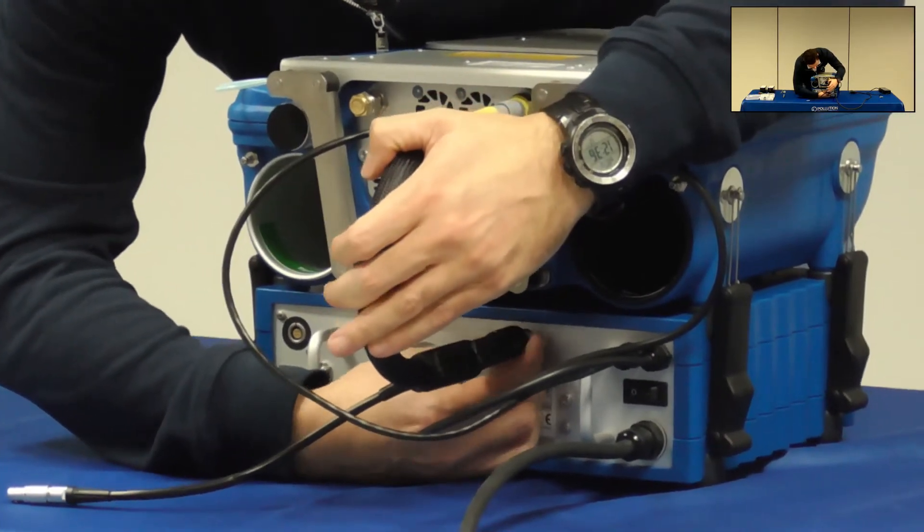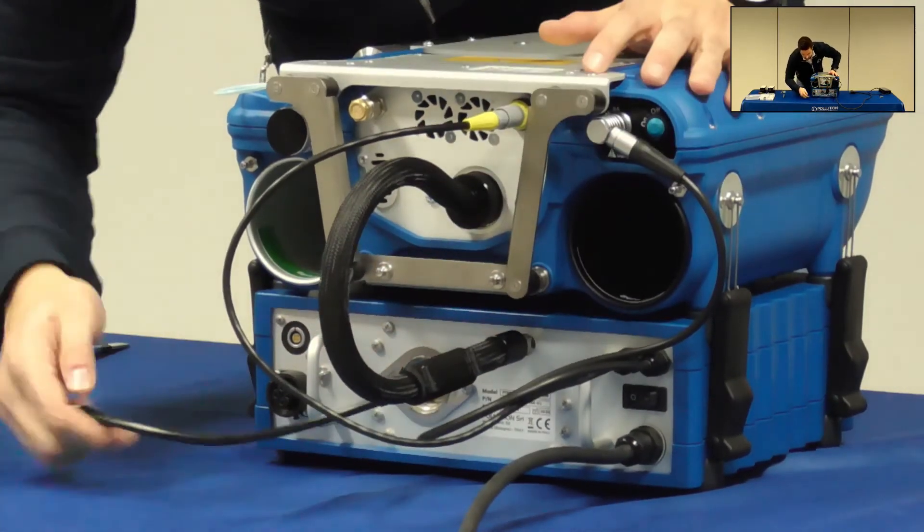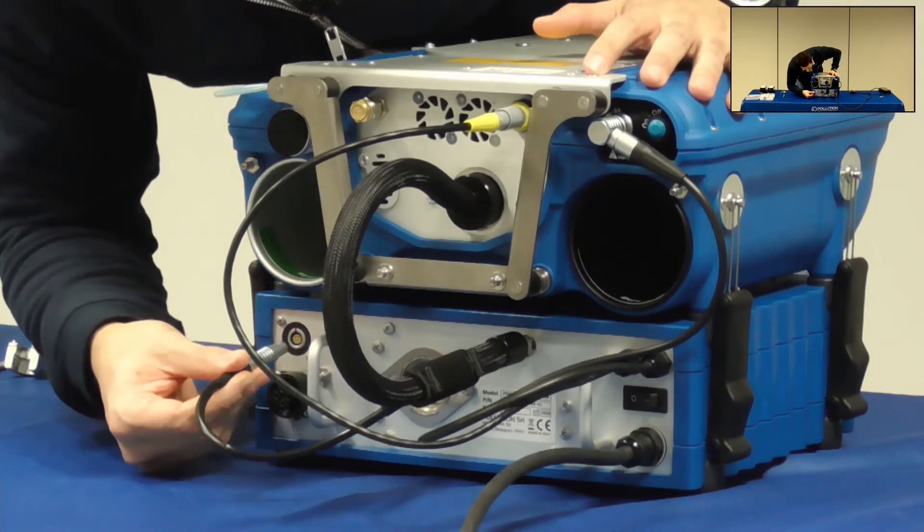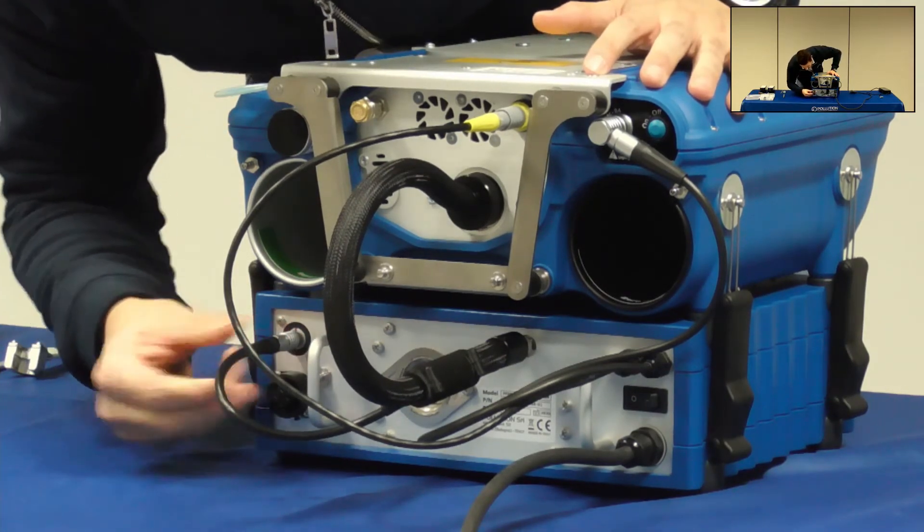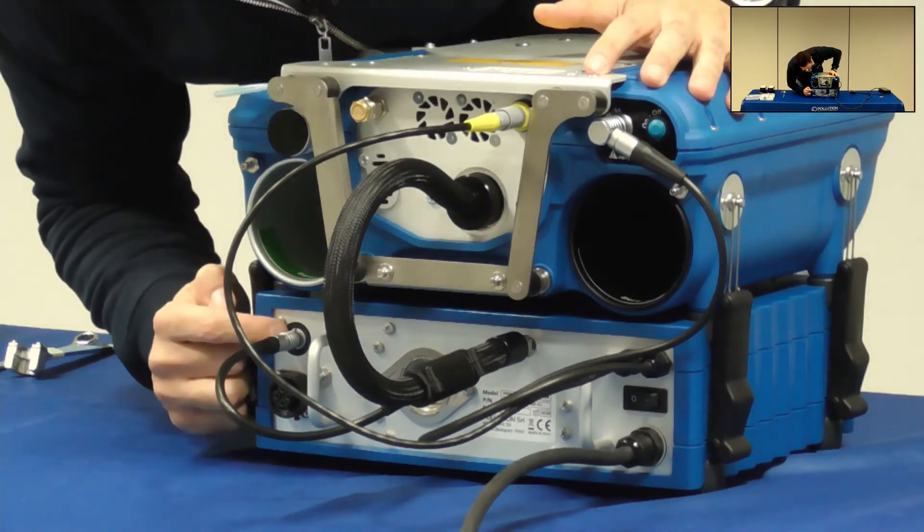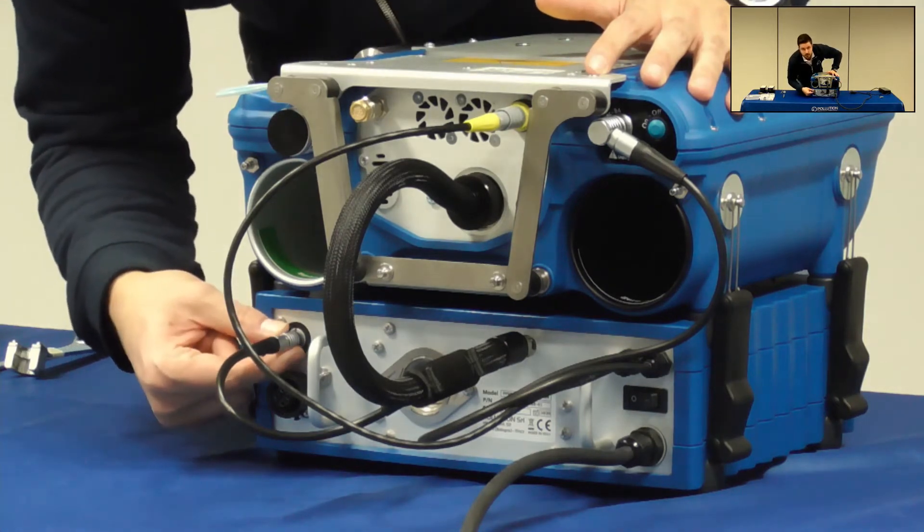You also have the power cable which can be linked in its proper slot which is with a red dot on it. Now the heated transfer line can be heated up to 180 degrees. There is a safety block here that keeps the cable in position.